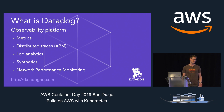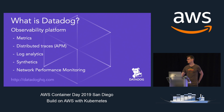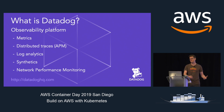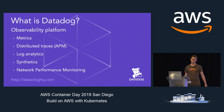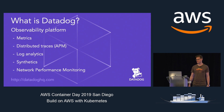Datadog provides observability for every layer of your stack. We started our lives as a metrics product which tells you what is happening, and then we added application performance monitoring to give you code level visibility. More recently, we added log aggregation, which can be sliced and diced by the same tags as everything else, as well as synthetics to give you a view outside in, and now network performance monitoring, which dovetails nicely with the capabilities explored by AWS AppMesh.